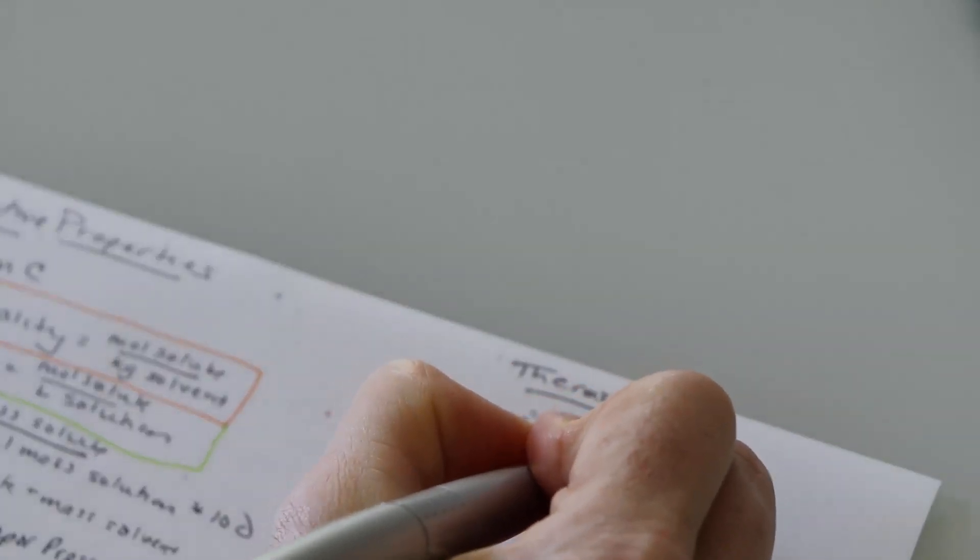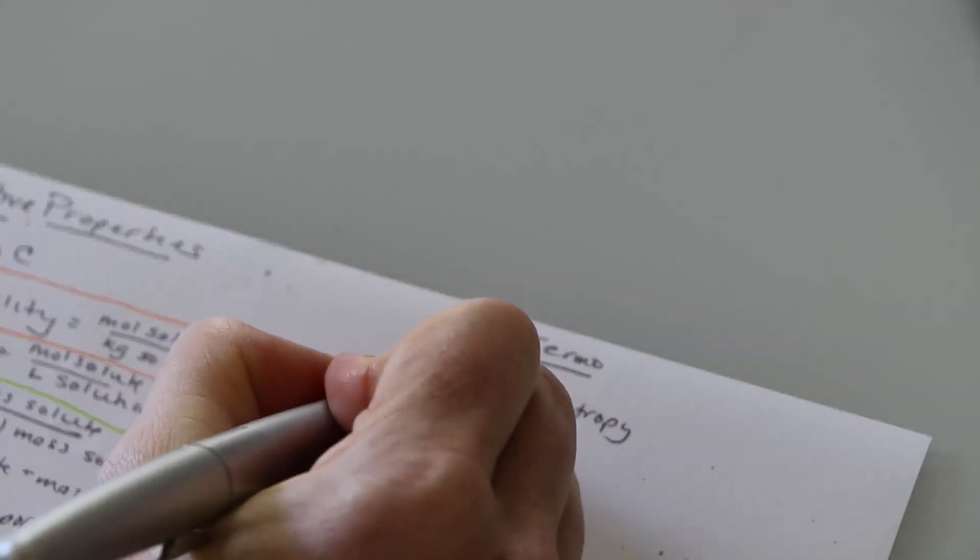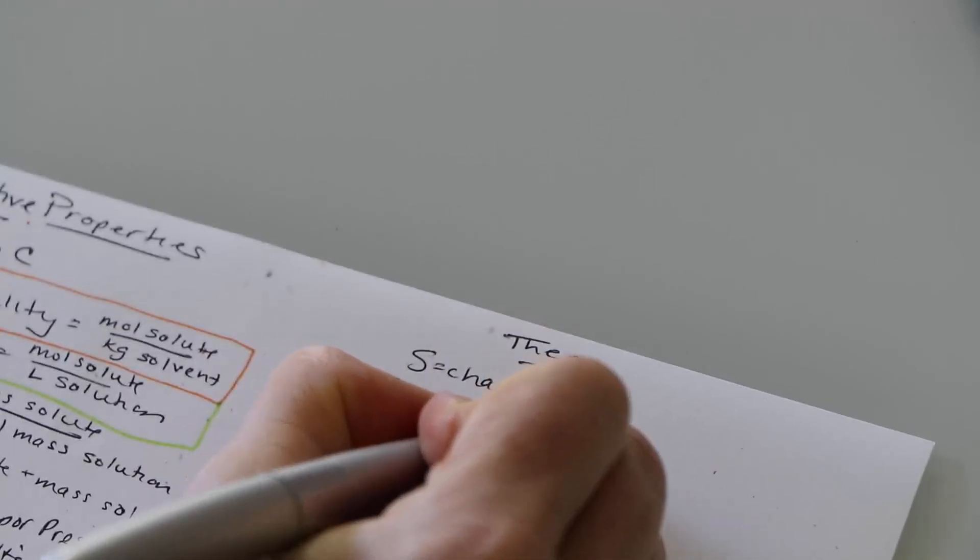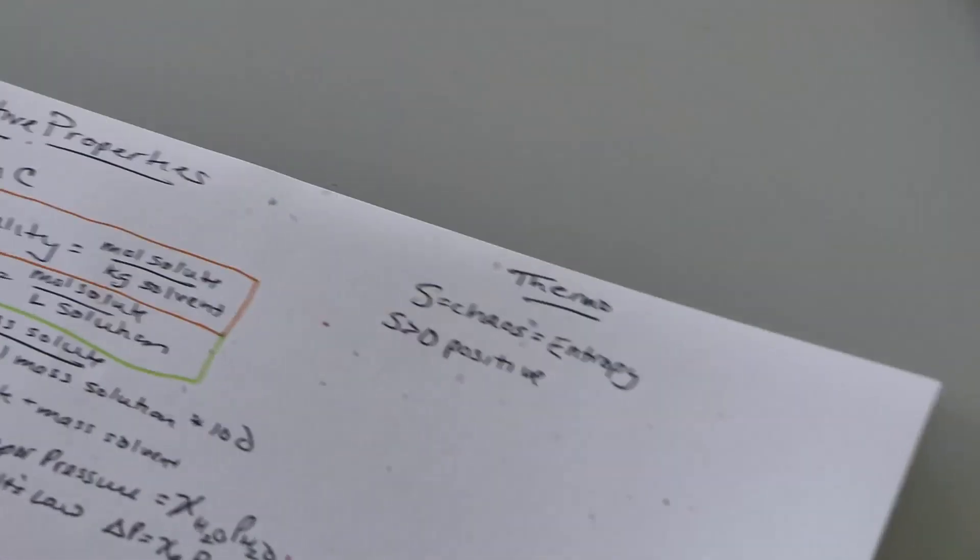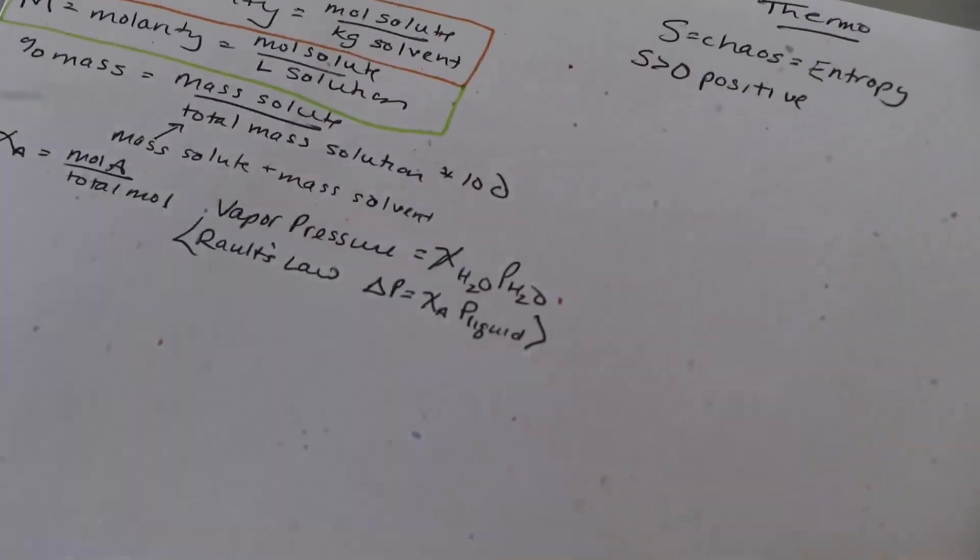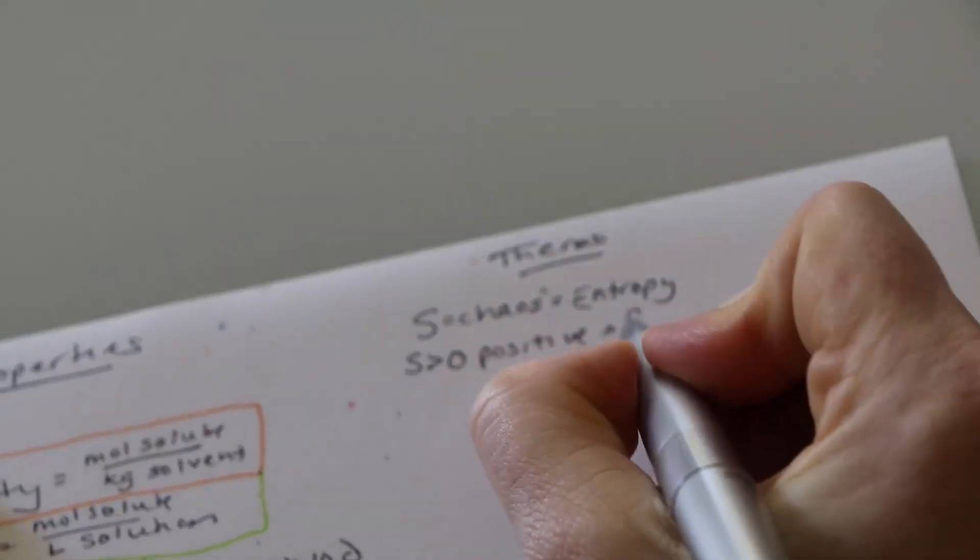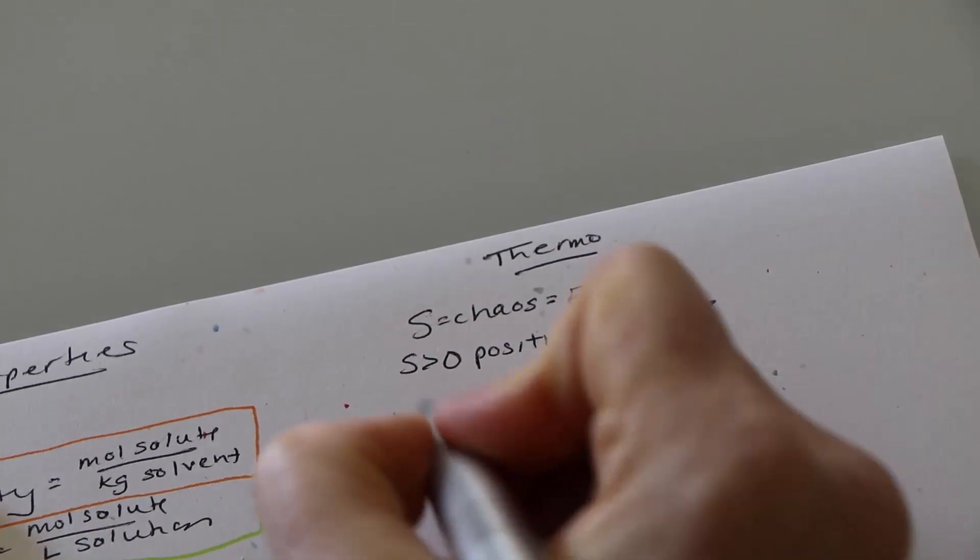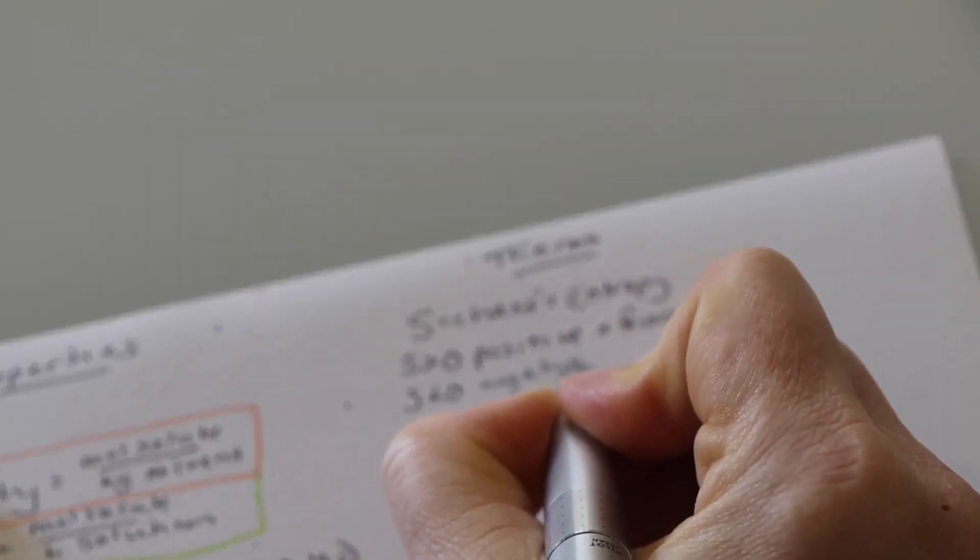Students always apply Raoult's law incorrectly. I also wrote down Raoult's law but that's how you find the vapor pressure. The vapor pressure Raoult's law is actually the change in pressure and you see that delta P equals the mole fraction of A times the pressure of the liquid.